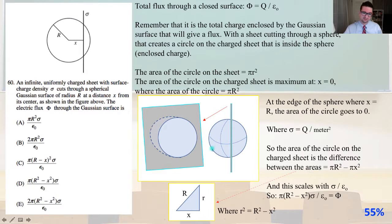The area of the circle on the sheet is πr². The area of the circle on the charged sheet is maximum at X equals zero, where the area of the circle equals πR². At the edge of the sphere where X equals R, the area of the circle goes to zero. Where sigma equals Q the charge over square meters.